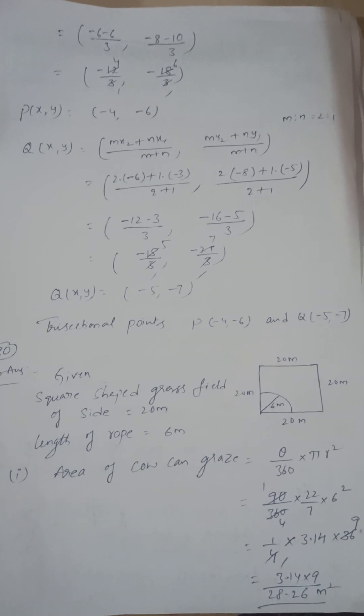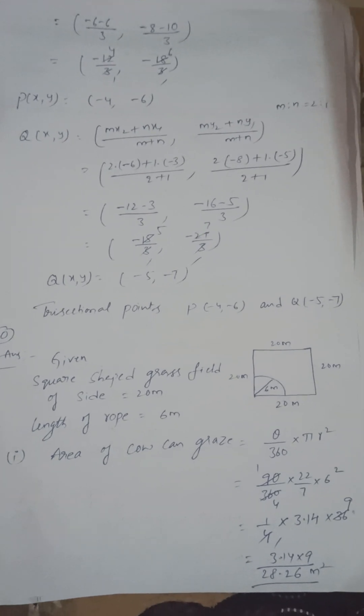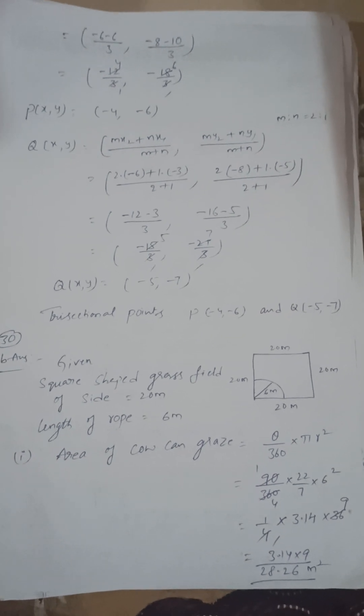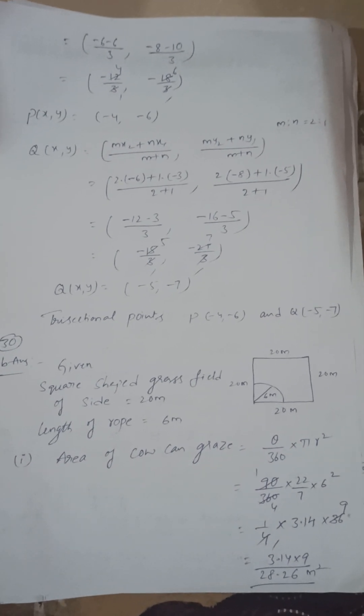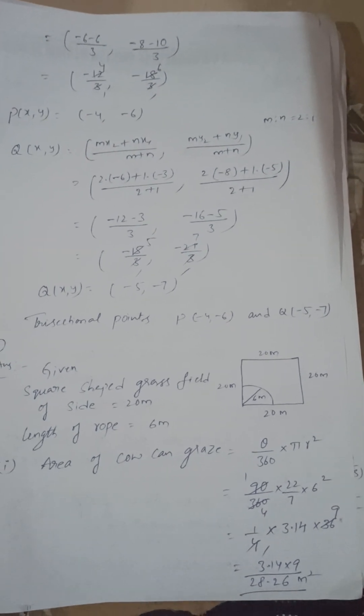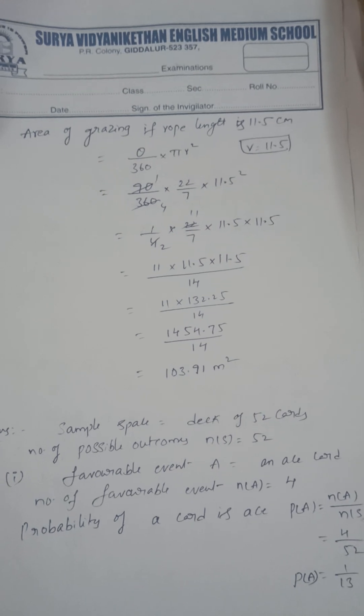Next, 30b: a cow is grazing in a square field. The length of the rope is 6 meters. Find the area, that is 28.26 meter square. If the rope length is 11.5 meters, the area is 103.91 meter square.